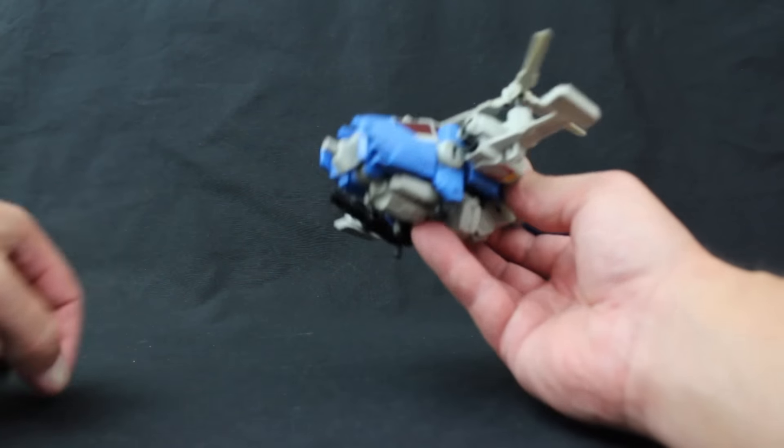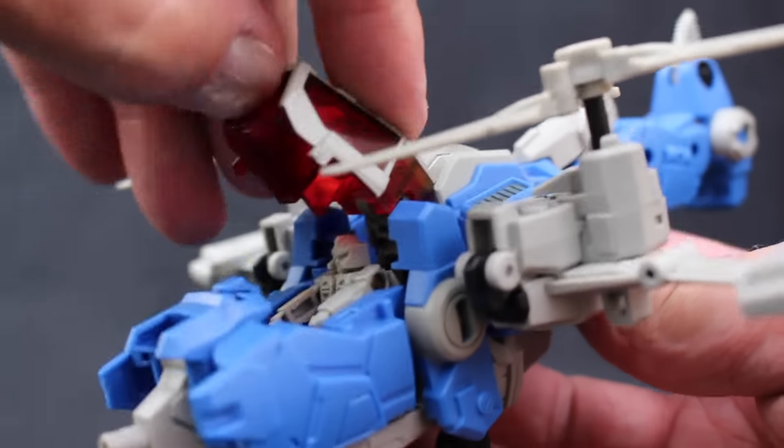First, remove the guns for transformation. Open the canopy and remove the Headmaster Gord.